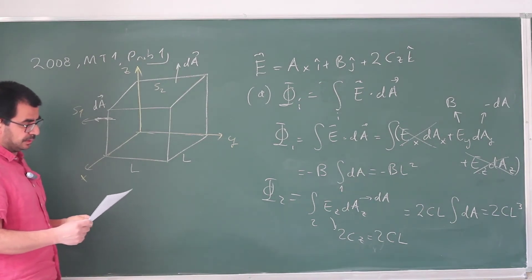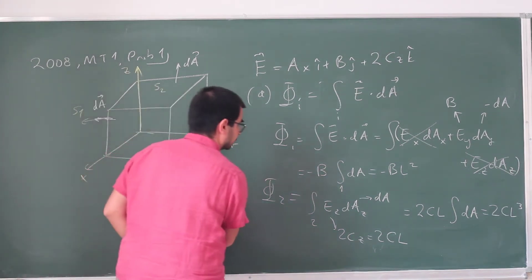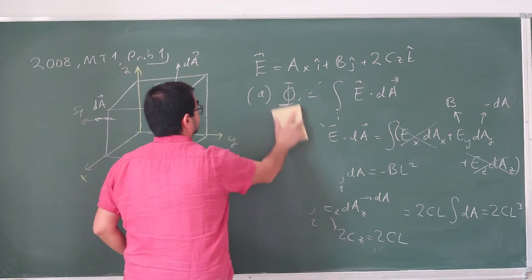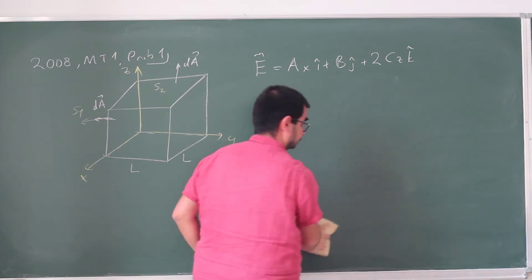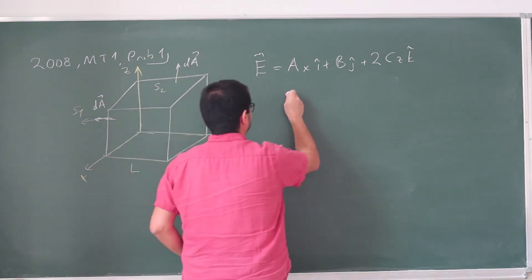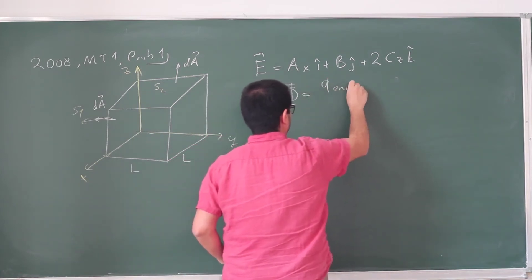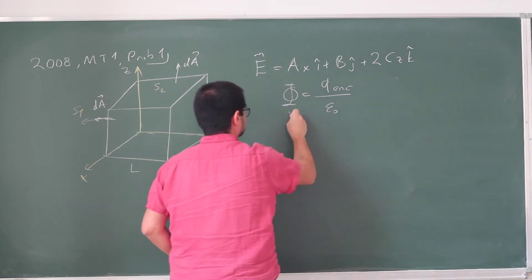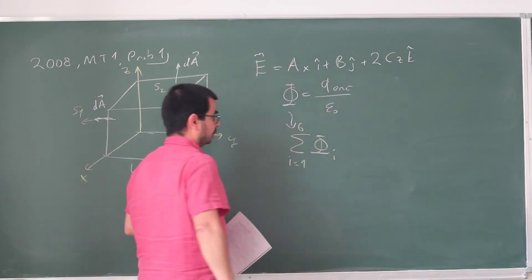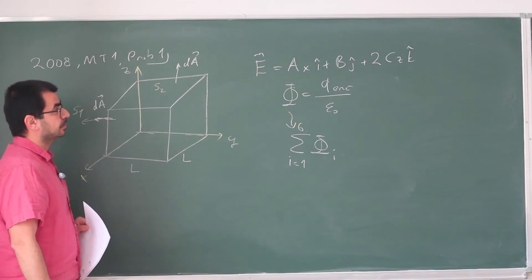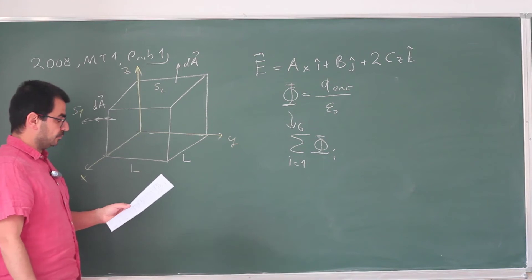So this is part A. For part B, they're asking you to find the total electric charge inside the cube. Now for this, you actually need to calculate all of these, which I did not. But after you calculate this, you can apply Gauss's law and say that the total electric flux is going to be charge enclosed divided by epsilon naught. So this is just going to be the sum of the flux from all the phases. You add those up, and then you multiply it by epsilon naught. That's going to give you the charge enclosed.